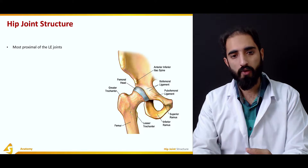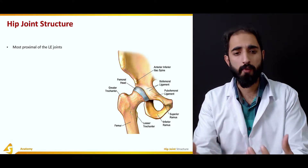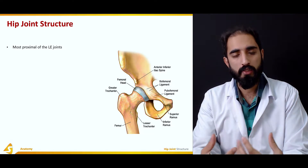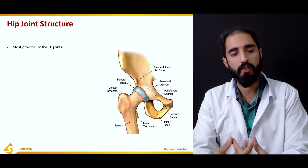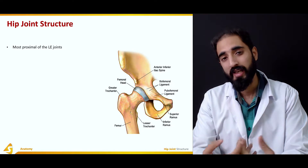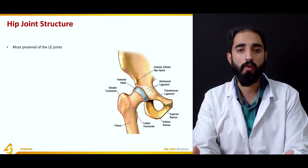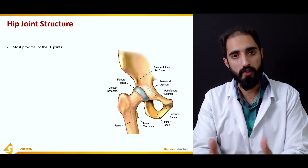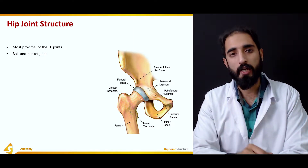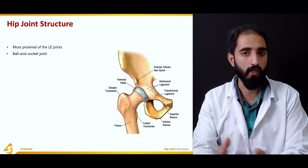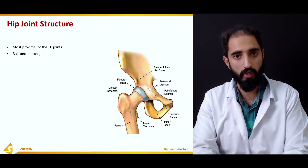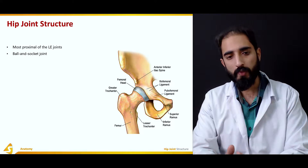The hip joint is the most proximal of the lower extremity joints and it is one of the largest joints in our body. The knee joint is perhaps the largest one and the hip is the second largest. It is a ball-and-socket joint. Another type of ball-and-socket joint in our body is the glenohumeral joint, also known as the shoulder joint.